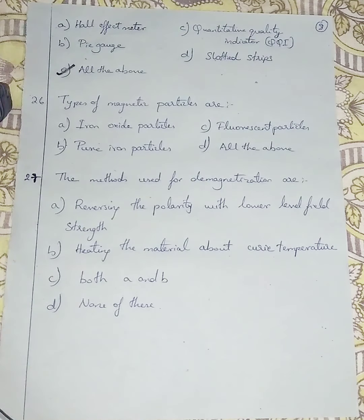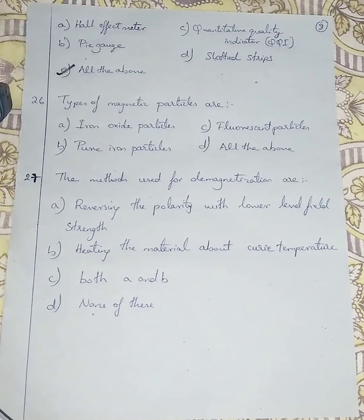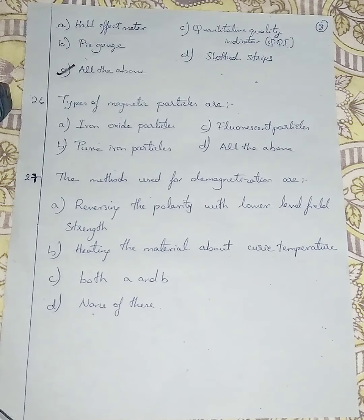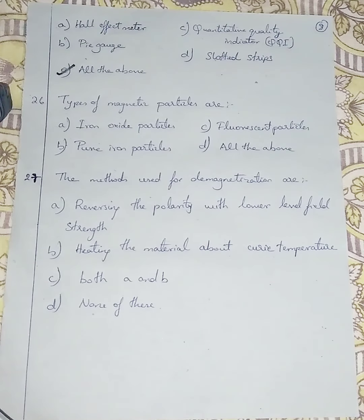Question number 26: What are the types of magnetic particles? Option A - iron oxide particles, Option B - pure iron particles, Option C - fluorescent particles, Option D - all of the above. Iron oxide particles can produce magnetism, pure iron particles can also produce magnetism, and fluorescent particles can also produce magnetism. So all three types are magnetic particles, and I am going with Option D - all of the above.